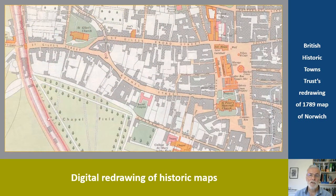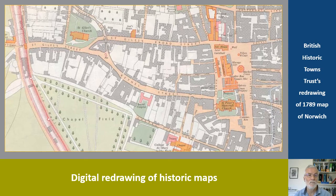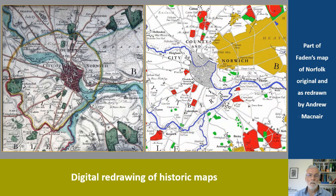Digital mapping has also been used by others to redraw historic maps. Here's an extract from the British Historic Towns Trust's redrawing of the 1789 map of Norwich, and another local example is Andrew McNair's digitisation of Faden's map and his digital recreation.